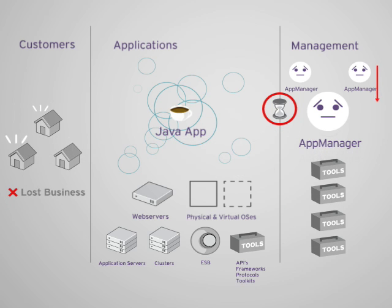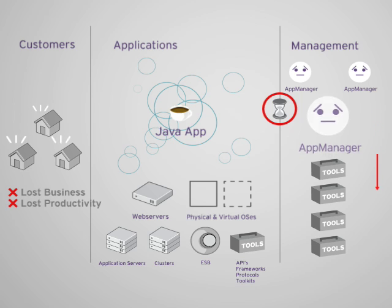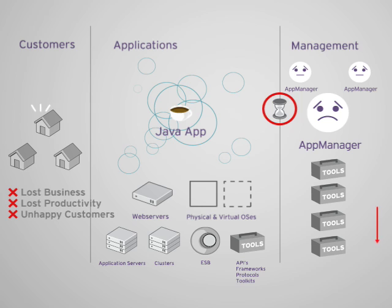Efficient management impacts how your customers see your business and the quality of service you provide. You must be able to recognize and repair performance and availability problems before they can affect your customers. It is possible to deploy content, configure application resources, and monitor the health of your infrastructure more easily.